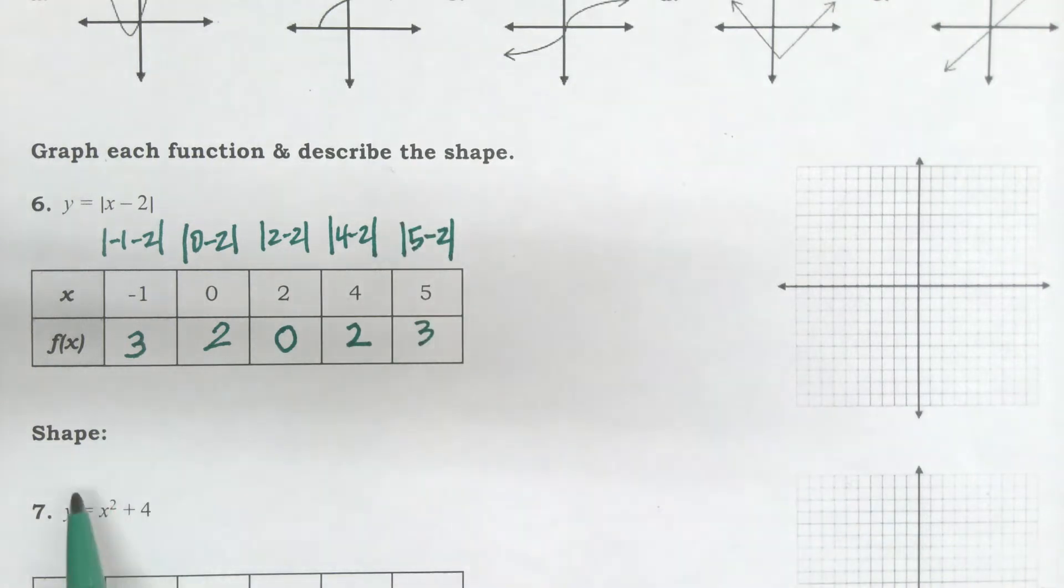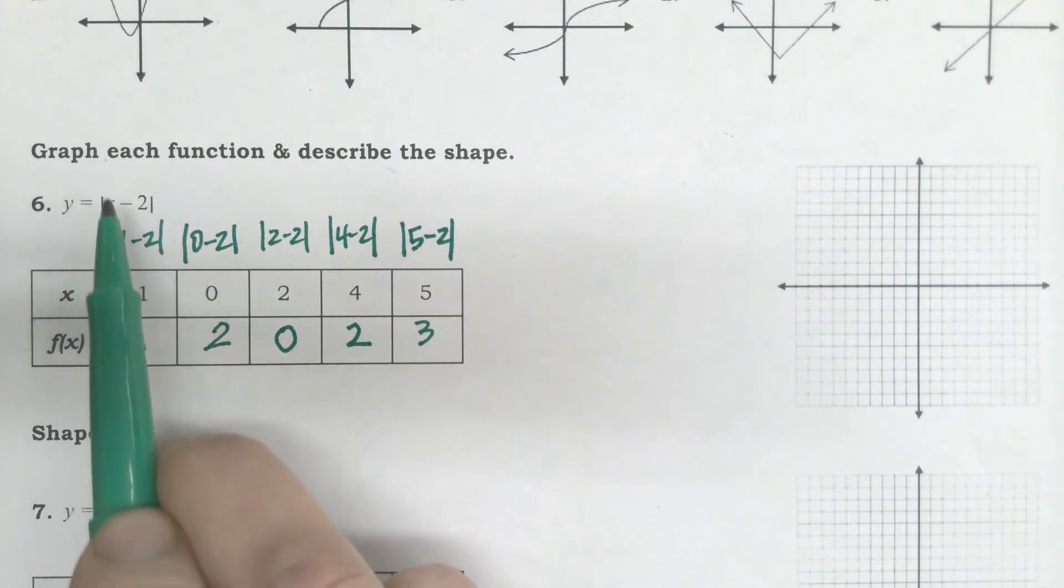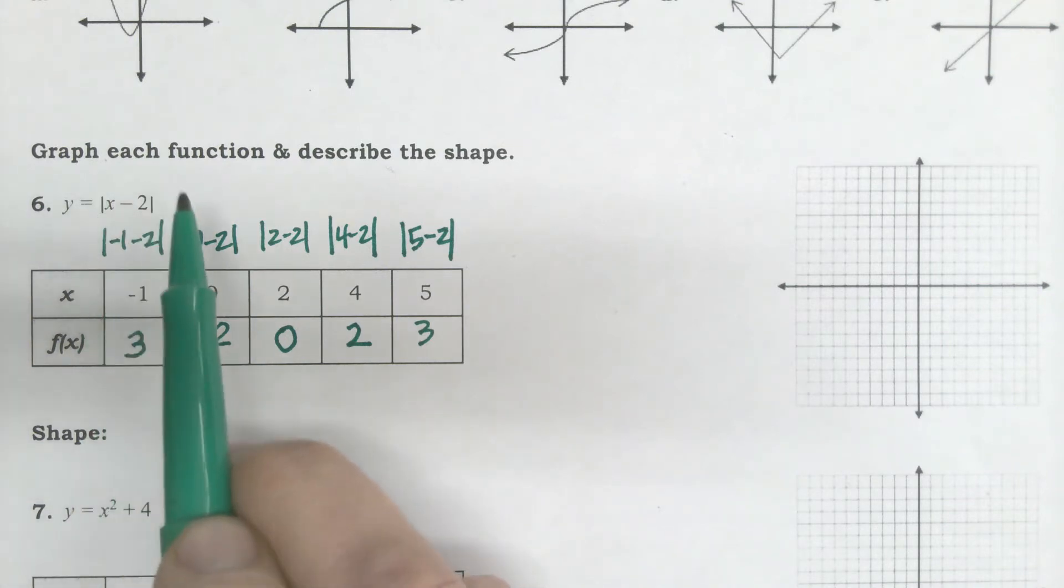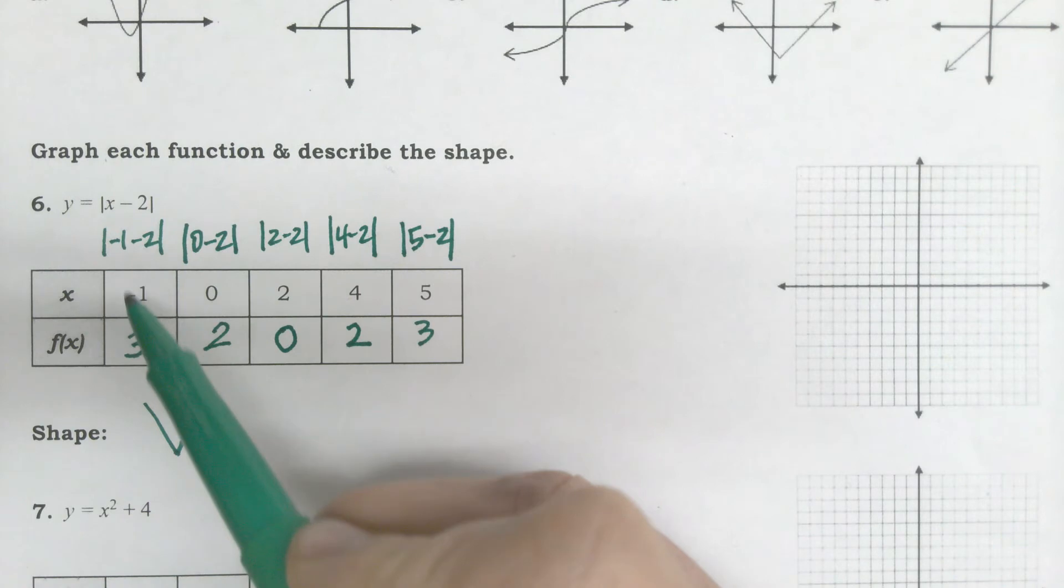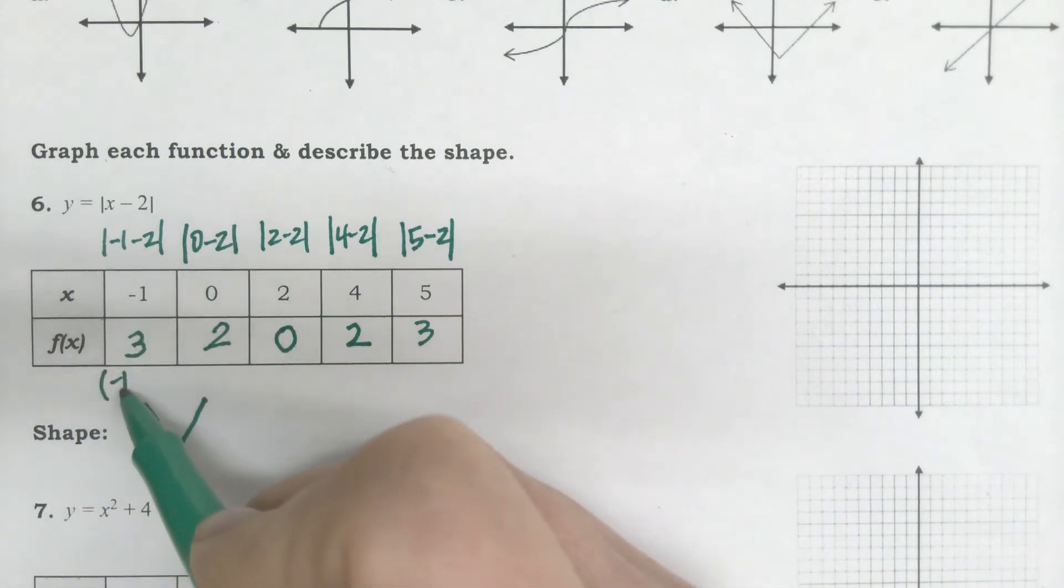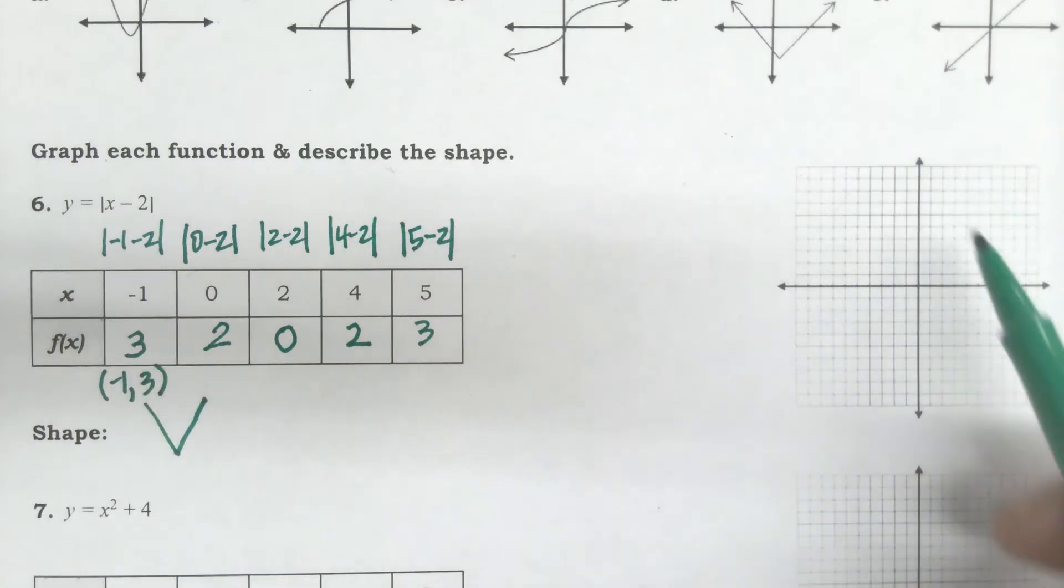What is the shape of this? Before I even graph it, what's the shape of it? Because it's got these lines on the outside, because it's an absolute value, it's going to look like a V. The shape is going to be a V. I should know that going into it. And, so, now I plot these like points.